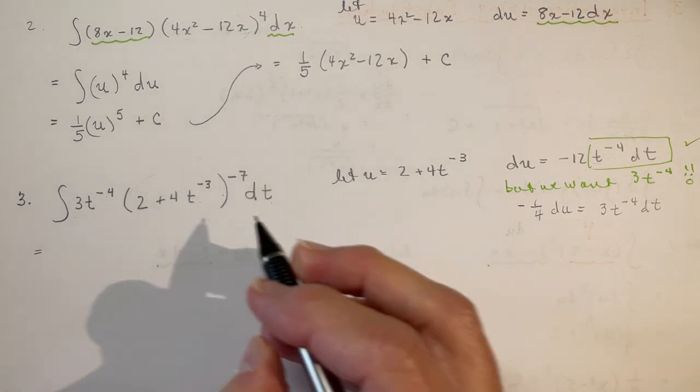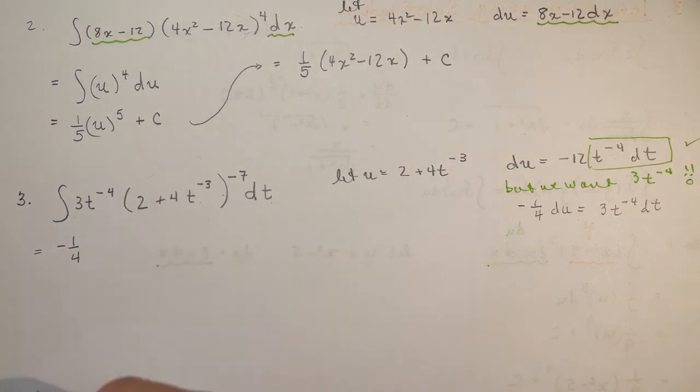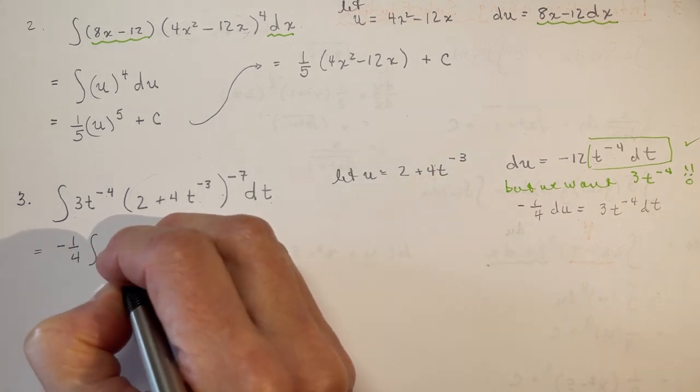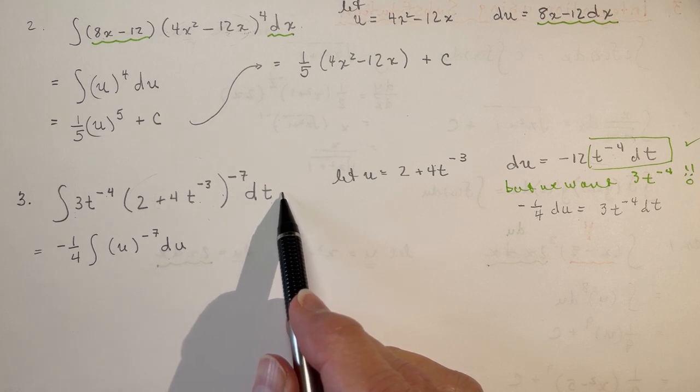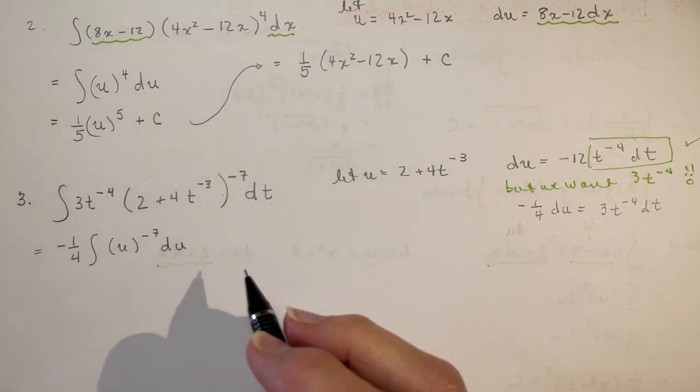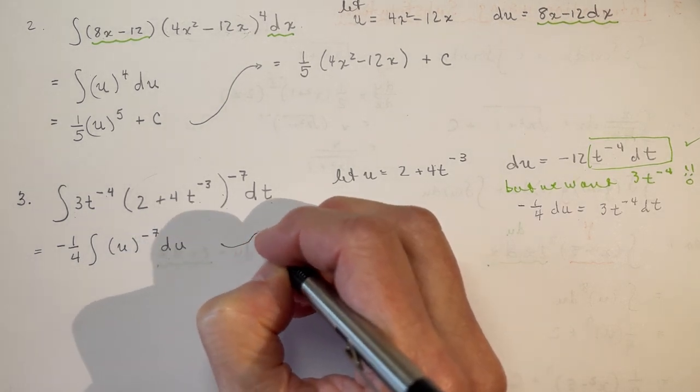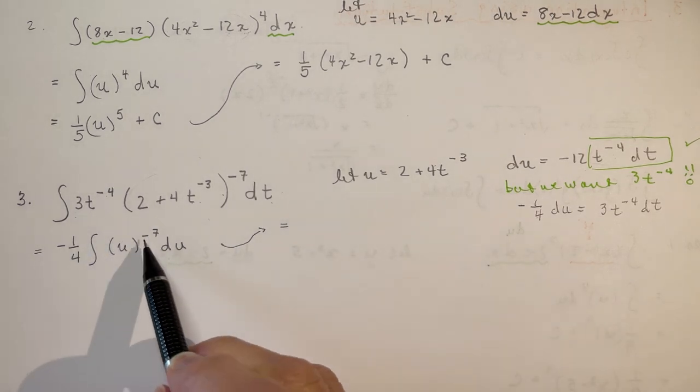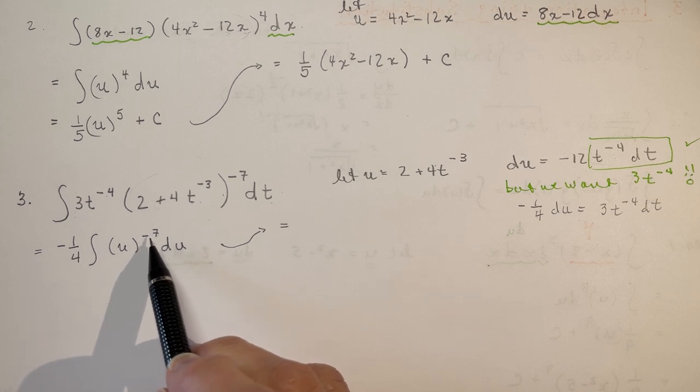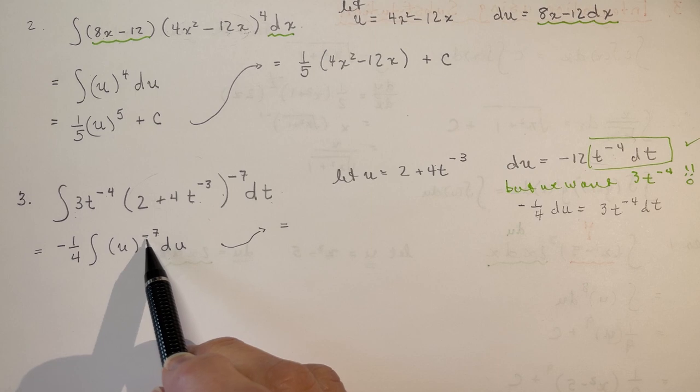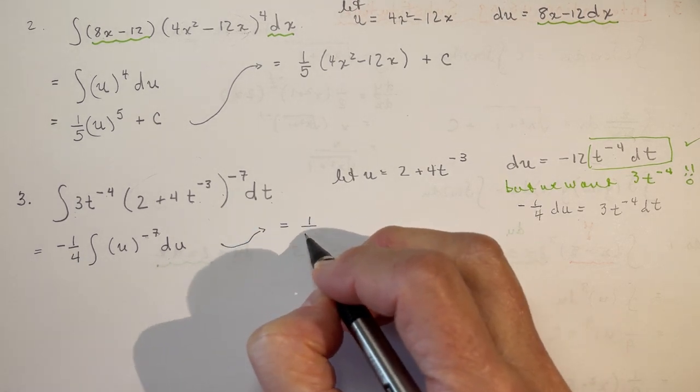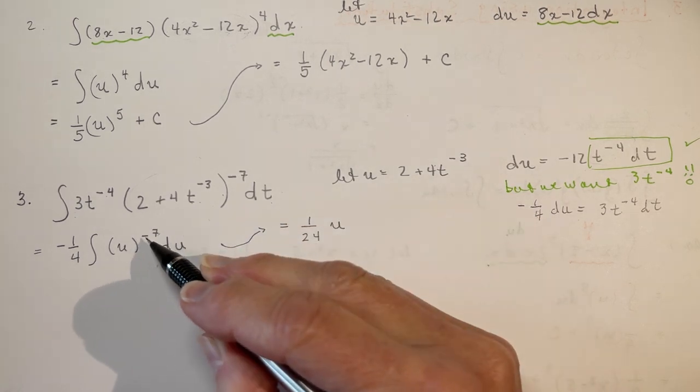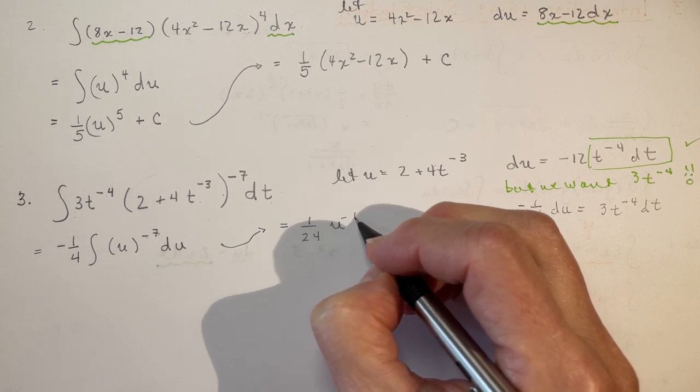And that means that I'm going to be able to put this minus 1 quarter out front here. So, I'm going to do minus 1 quarter, the indefinite integral of, I replaced this. This is my u. So, I'm going to have u to the power of minus 7 du. So, everything's with respect to u here now. I've gotten rid of all of the t's. That's very important. So to the minus 7, I add 1. Don't go the wrong way. I did myself when I was doing this the first time. So, minus 7 plus 1 is minus 6. I divide by minus 6. That's going to give me plus 1 over 24. So, I'm going to get 1 over 24 u. And I added 1. So, u to the minus 6 plus c.